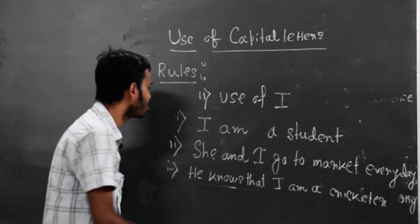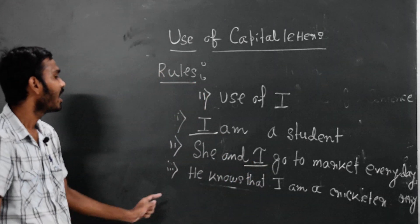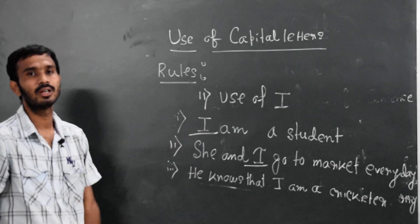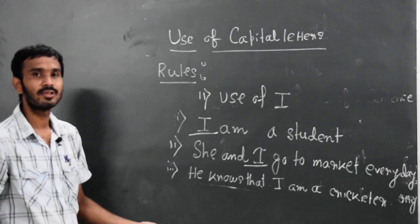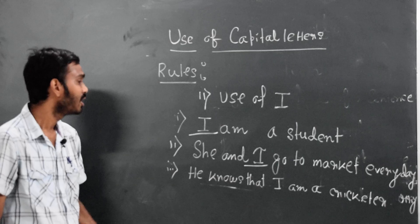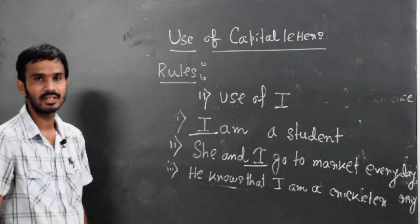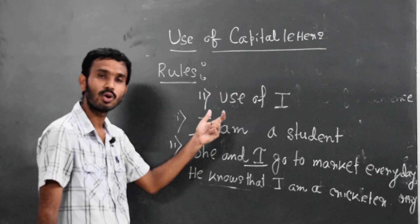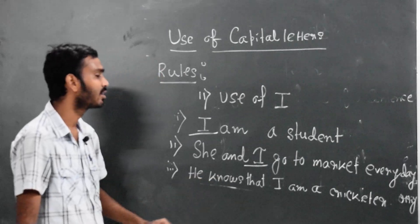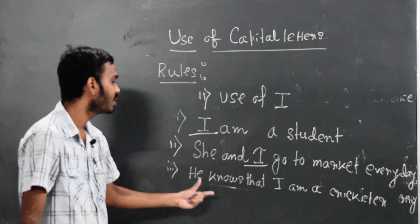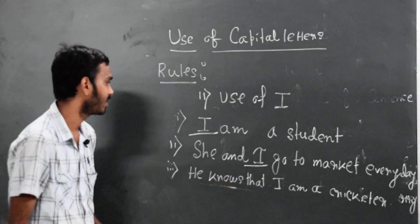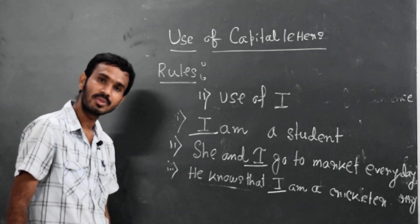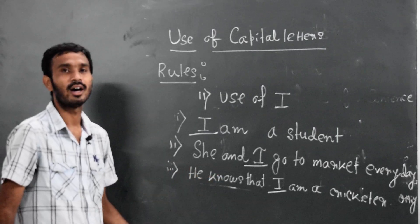Three sentences: I am a student. She and I go to the market every day. He knows that I am a cricketer. In all three sentences, the word 'I', irrespective of its position—in the first sentence, 'I' comes at the beginning; in the second sentence, 'I' comes in the middle; in the third sentence with a clause, 'I' is still in capital form. Therefore, the rule we always need to maintain is that whenever we use 'I', whether at the beginning, middle, or end of the sentence, it will always be in capital form.